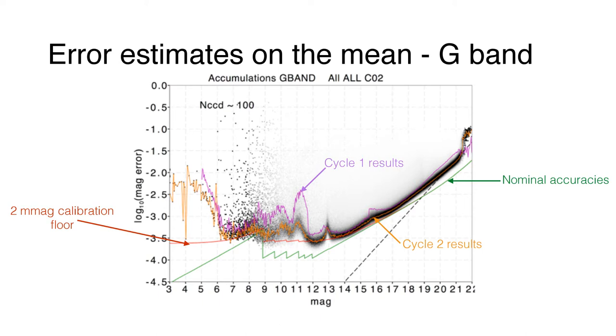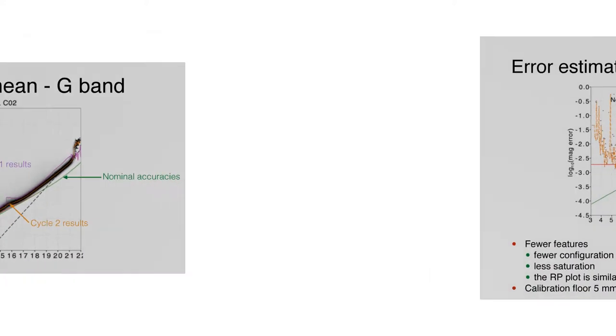Also, the systematics have improved, in particular at the bright end for G brighter than 12 magnitude due to the better saturation handling.